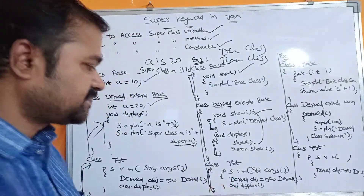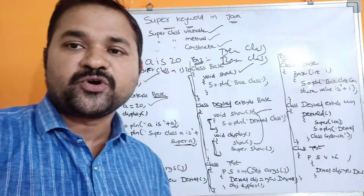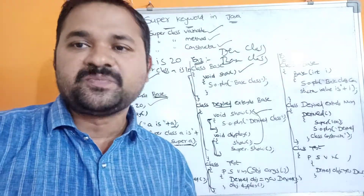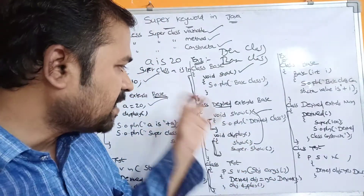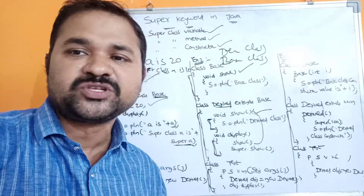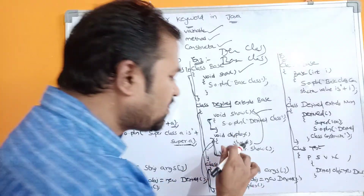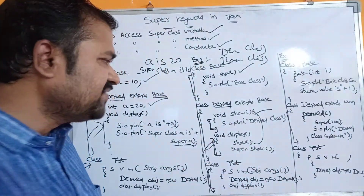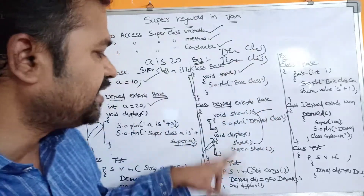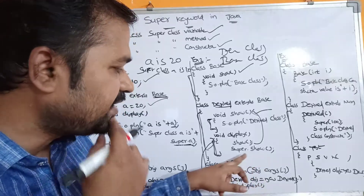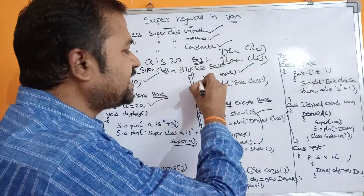The main class is test and it has a main method: public static void main(String[] args). Execution starts from the main method. We create an object for the derived class: derived obj = new derived(). The derived class doesn't contain any instance variables, so no memory allocation for variables. Then obj.display() is called - control goes to the display method. The show() call prints "derived class", and super.show() calls the base class show method, printing "base class".